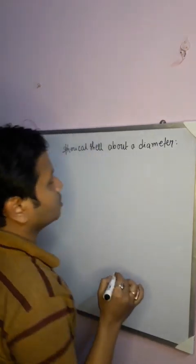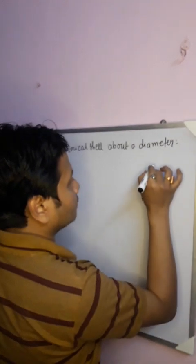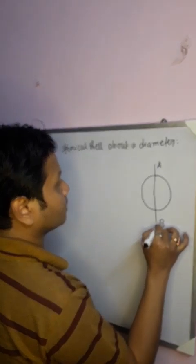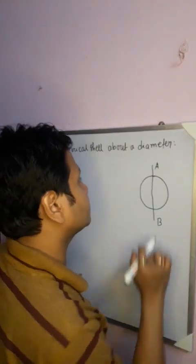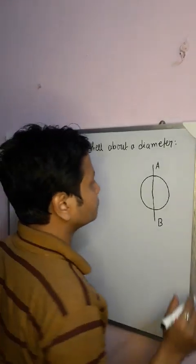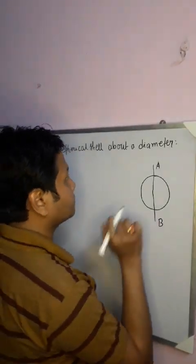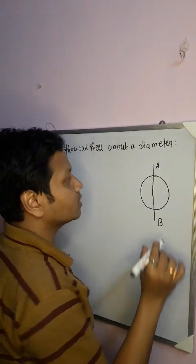Let us suppose that this is a spherical shell rotating with axis AB. There is a spherical shell that is rotating with respect to the axis AB, and we know that this spherical shell consists of a large number of slices.